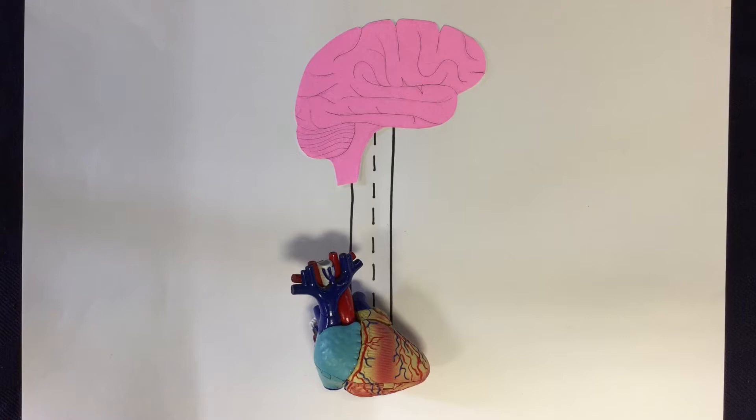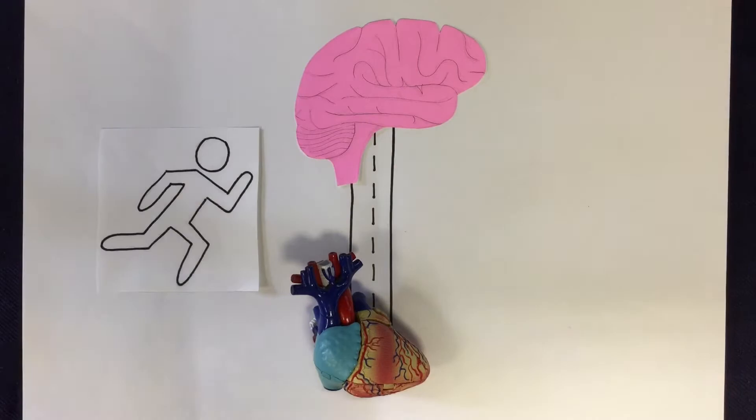For example, the heart is told by the brain to beat faster during exercise or when you get a fright.